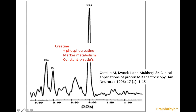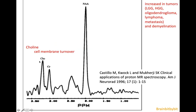The creatine peak is composed of two metabolites and is a marker of metabolism. Because it is a fairly constant peak, it is used for ratios with NAA and choline. Choline is a marker of cell membrane turnover and is increased in all different kinds of tumors and in demyelination.